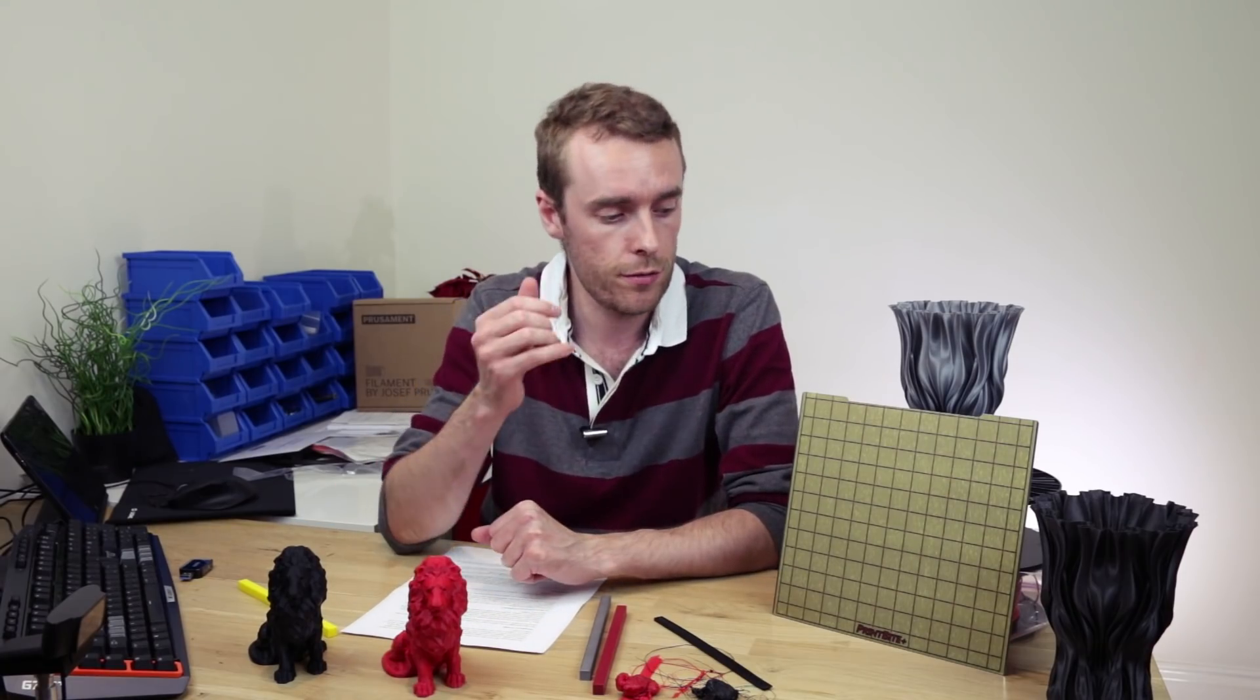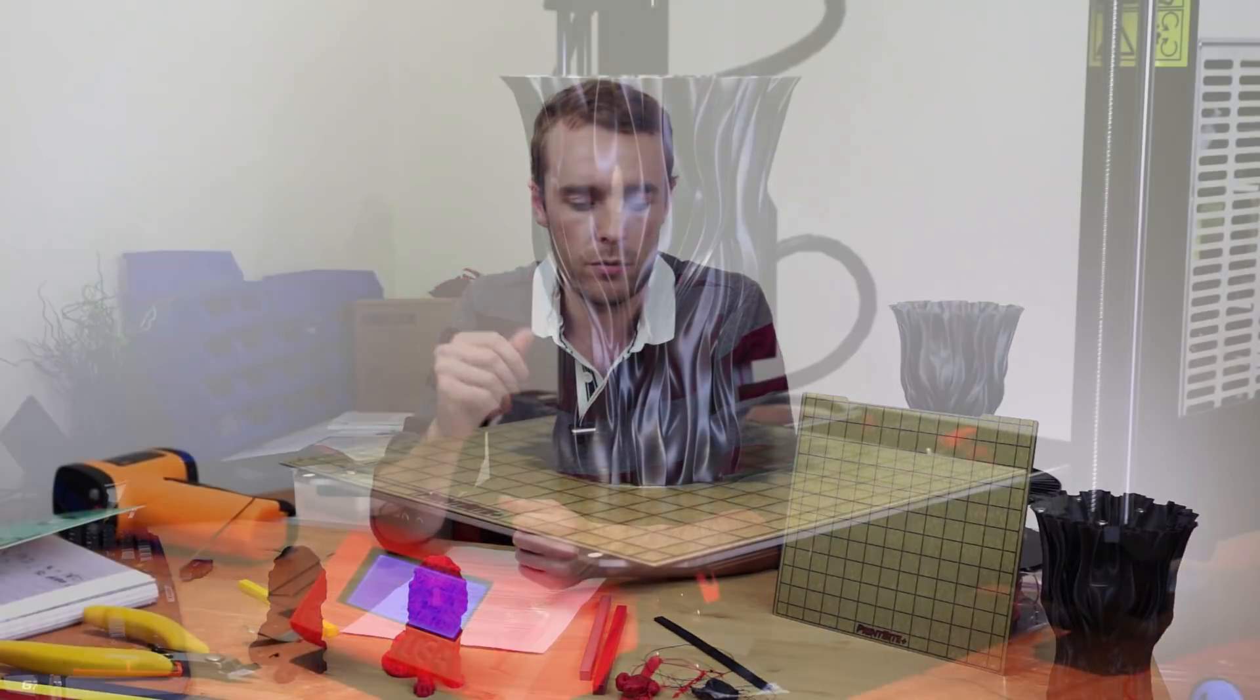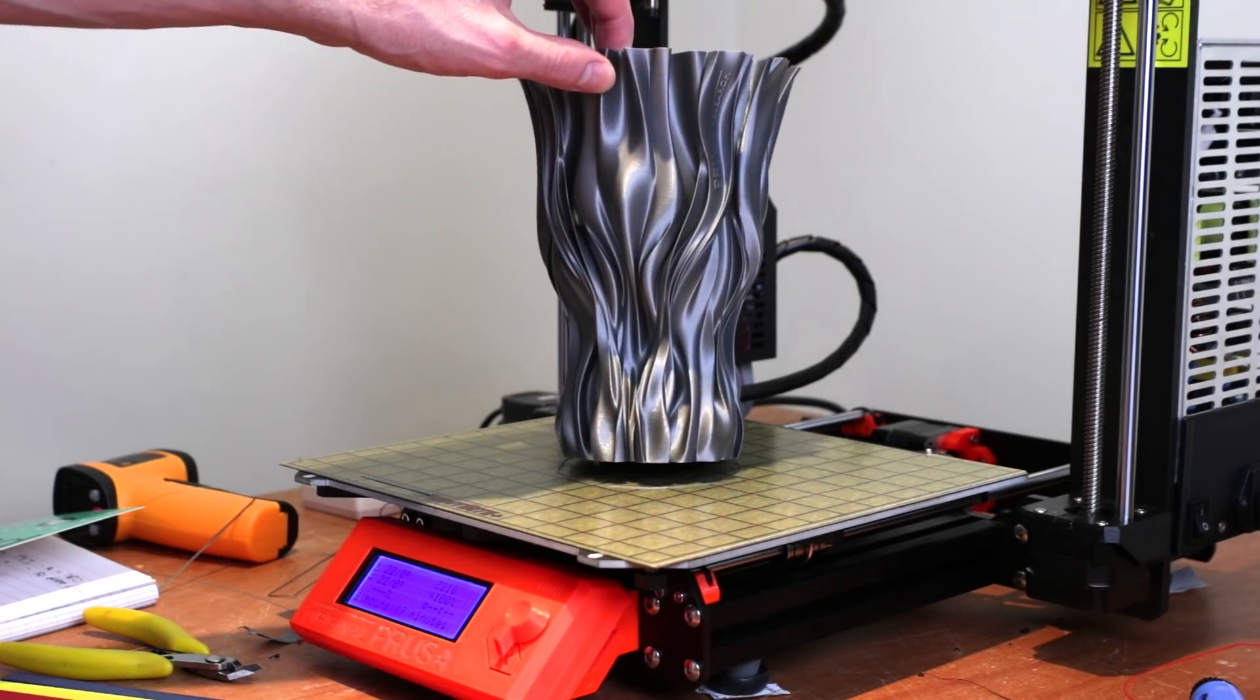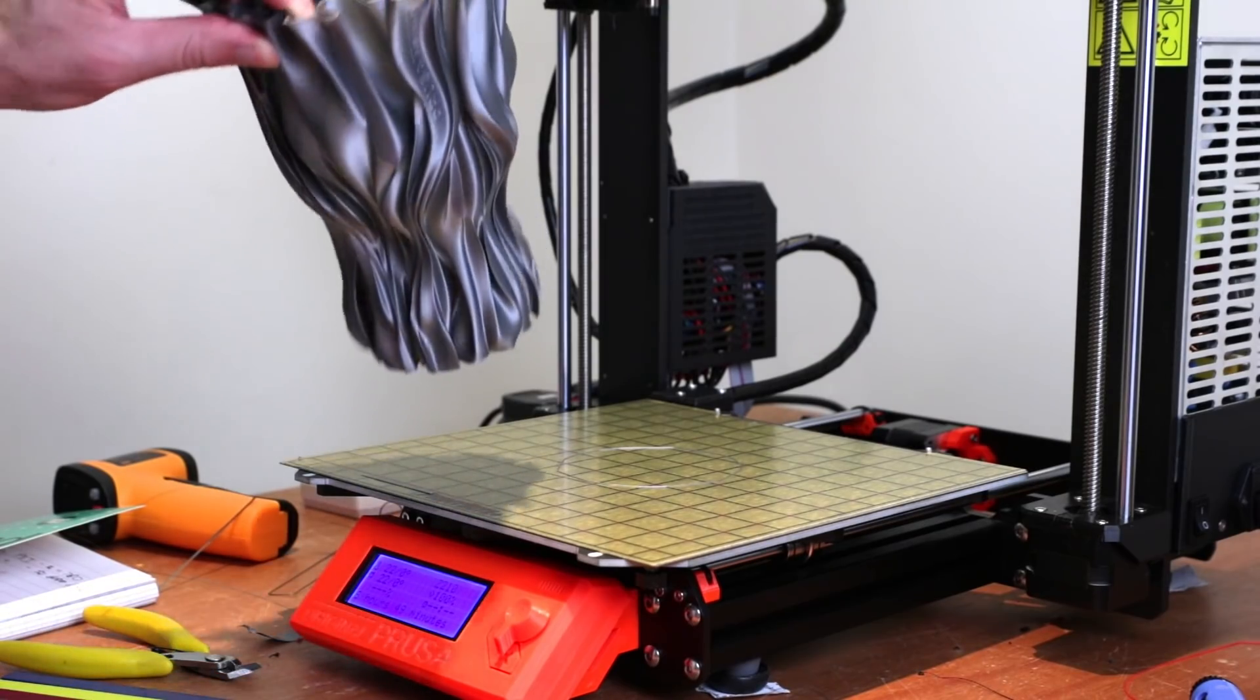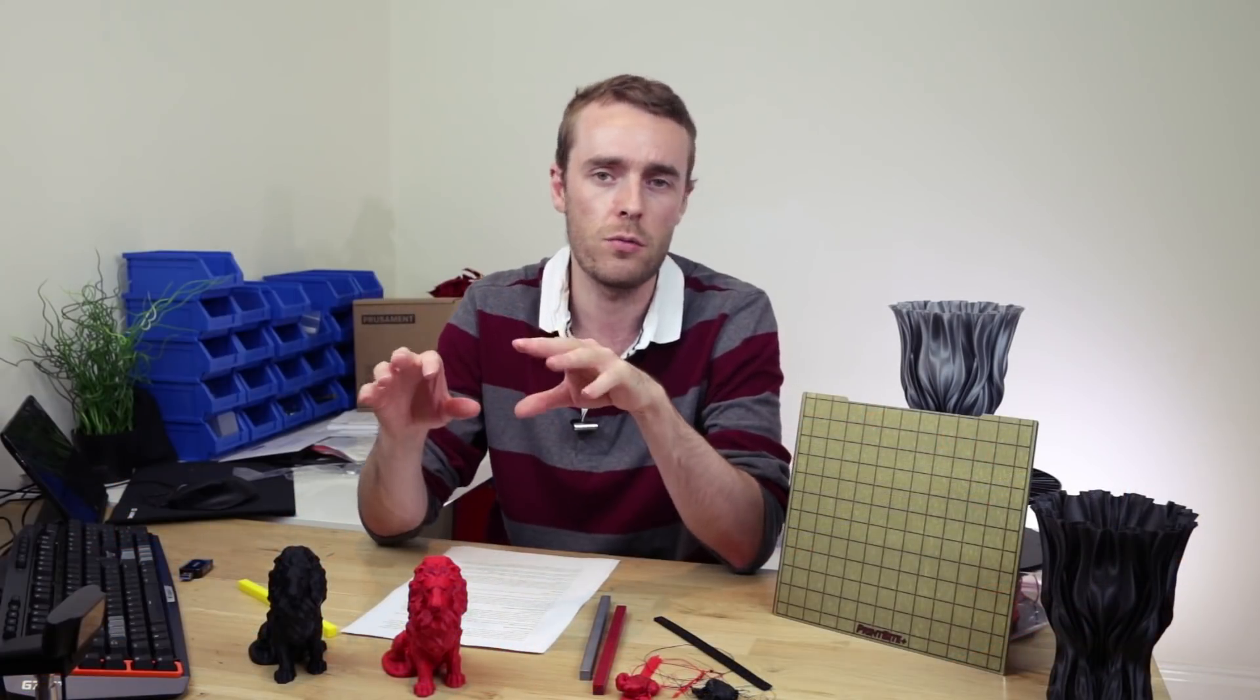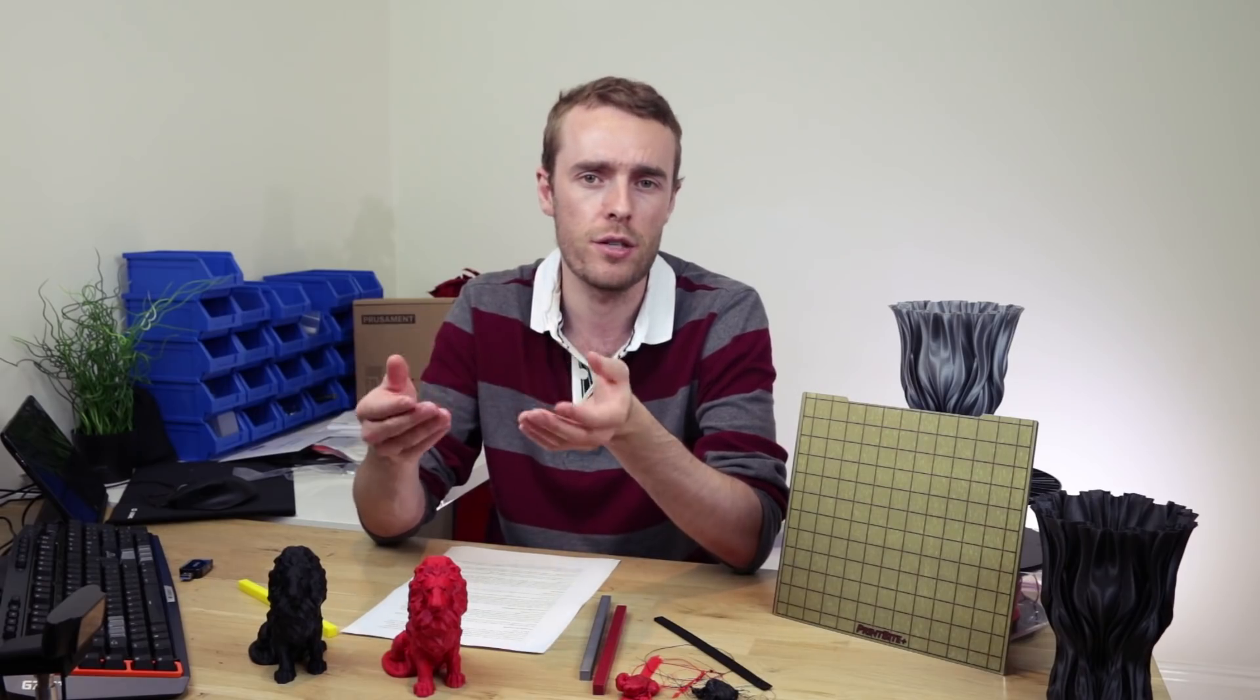One big advantage of a self-release system like this is that you don't have to touch the surface to get the print off. Now you might think well I don't mind touching it, but it's not so much you touching the hot bed that's the problem, it's the fact that your oily fingers get on the bed. The oil spreads as it gets warm and then you'll have to clean it more and more often in order to retain the same printing properties.